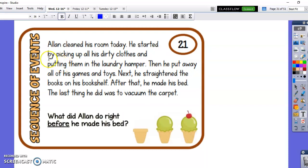So here's another good one. Alan cleaned his room today. He started by picking up all his dirty clothes and putting them in the laundry hamper. Then he put away all of his games and toys. Next, he straightened the books on his shelf. After that, he made his bed.